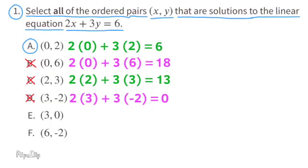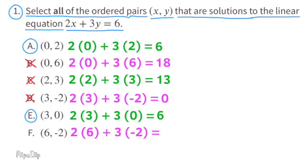E: substitute x with 3 and y with 0. 2 times 3 plus 3 times 0 — 2 times 3 is 6 and 3 times 0 is 0. So 6 plus 0 equals 6, so the ordered pairs for E are a solution. F: substitute x with 6 and y with negative 2. That's 12 plus negative 6, or 12 minus 6, which is 6. The ordered pairs for F are also a solution to the linear equation.